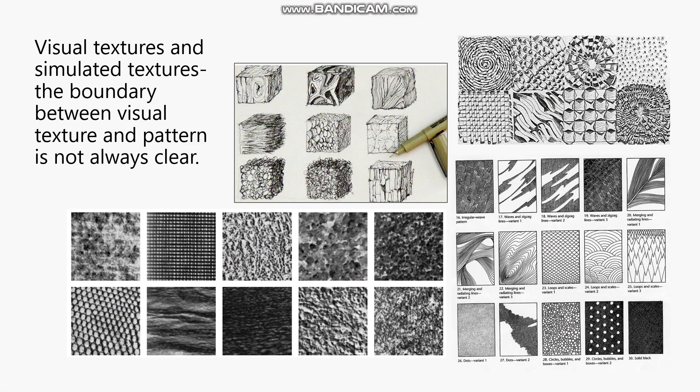Visual textures are any kind of illusion of texture created on a two-dimensional surface purely by two-dimensional mark-making — not actually creating a physical texture, but just creating a sense of texture through mark-making. Simulated textures are where, on a two-dimensional surface, you create a visual texture that simulates — that looks just like — an actual physical texture we know of in the real world.